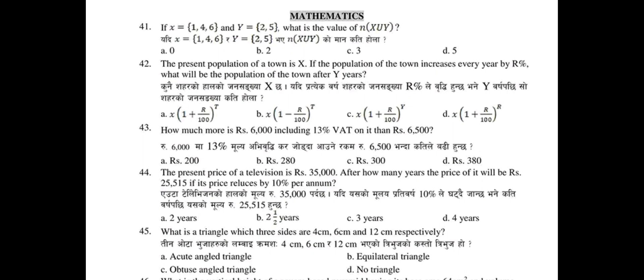Question 41: If X equals {1, 4} and Y equals {2, 5, 7}, what is the value of X union Y? The answer is 41 — option B, with 42 elements in the union.